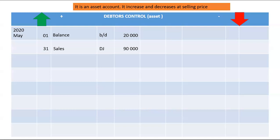Any payments that need to be reversed or canceled will be canceled in the CPJ — we only cancel the cash part of the payment. Any discount that was granted to a debtor when they made a payment will be canceled in the general journal. The RD (refer to drawer) payment that appears in the CPJ will be recorded on the debit side of your debtors control account. Any refunds we make to debtors will also be recorded on the debit side.